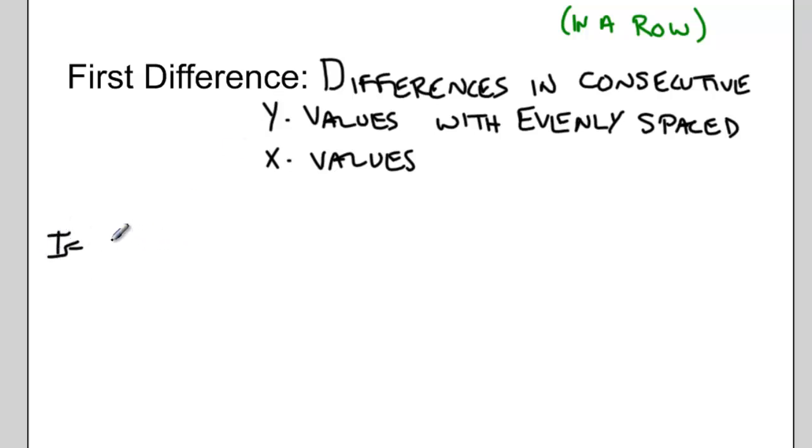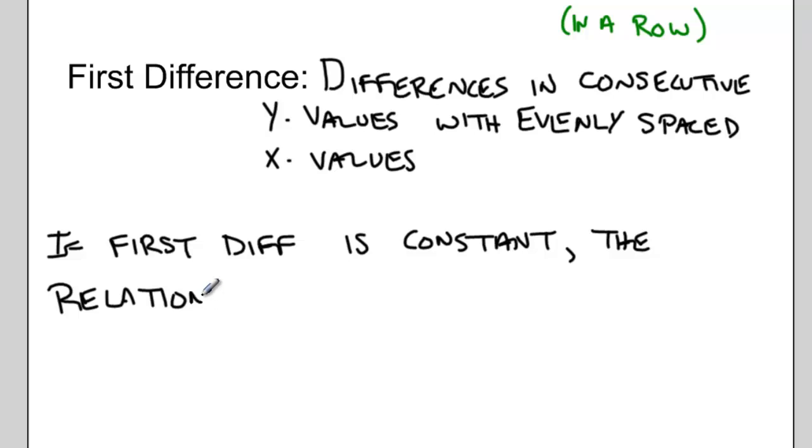And if the first difference is constant, if all of the first differences are the same, then the relationship that we're looking at is linear. It would be a straight line if we graphed it.